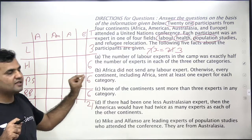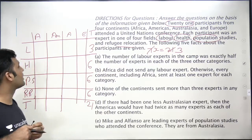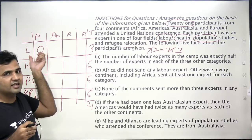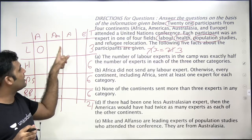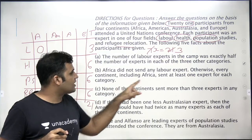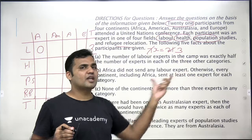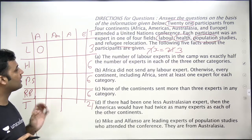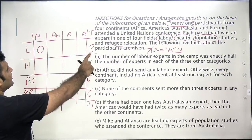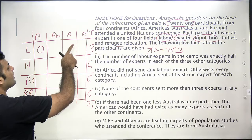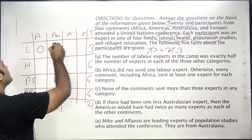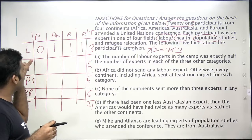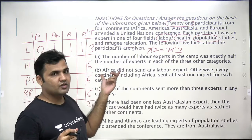Next clue: Africa did not send any labor expert, but otherwise every continent including Africa sent at least one expert for each category. That means there is only one cell with a value of zero — the Africa-labor cell. Zero cannot appear anywhere else in the matrix. Since the labor total is 3 and each of the other three continents must have at least 1, we get exactly 1 in each of those three cells. So the entire labor row is now determined.